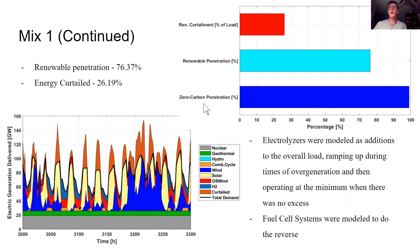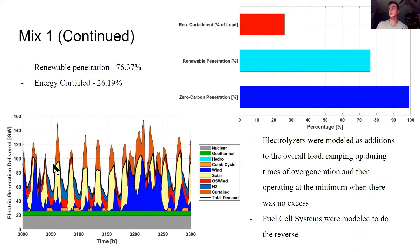The electrolyzers were modeled to always be on — they spool up when there's excess energy and turn down to a minimum when there's no excess. The fuel cells do the opposite to complement that. However, this creates a disparity where the high levels of load are significantly higher than the low levels, which is something to be concerned about with this mix.